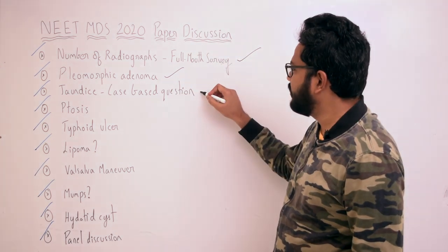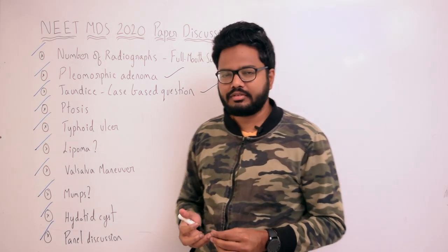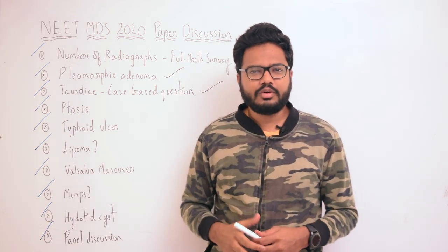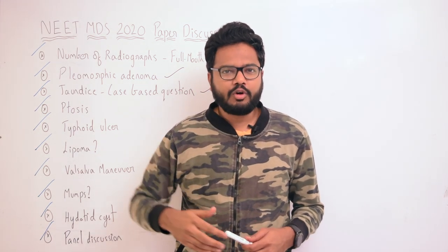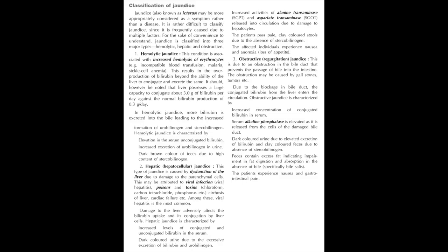Moving on to the next question, there seems to be a case-based question from jaundice. We have different types of jaundice: hemolytic, hepatic, and obstructive. In hemolytic jaundice, there is elevation in serum unconjugated bilirubin, increased excretion of urobilinogen in urine, and dark brown color of feces due to high content of stercobilinogen.